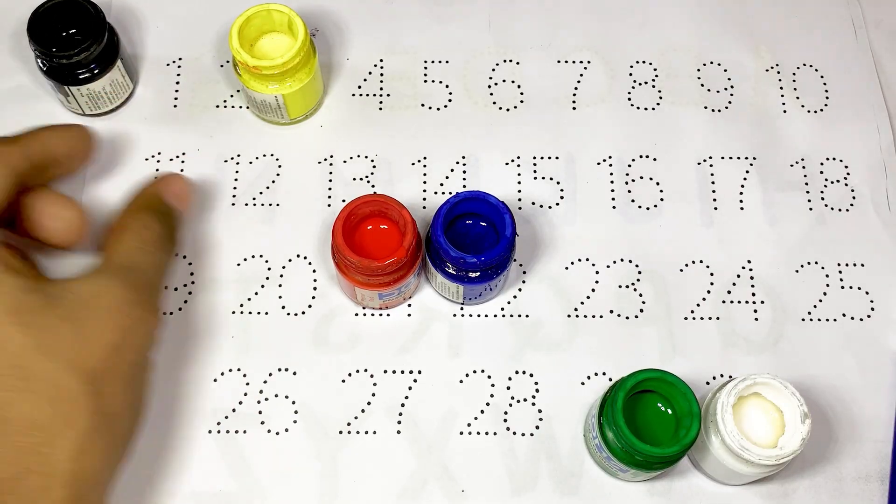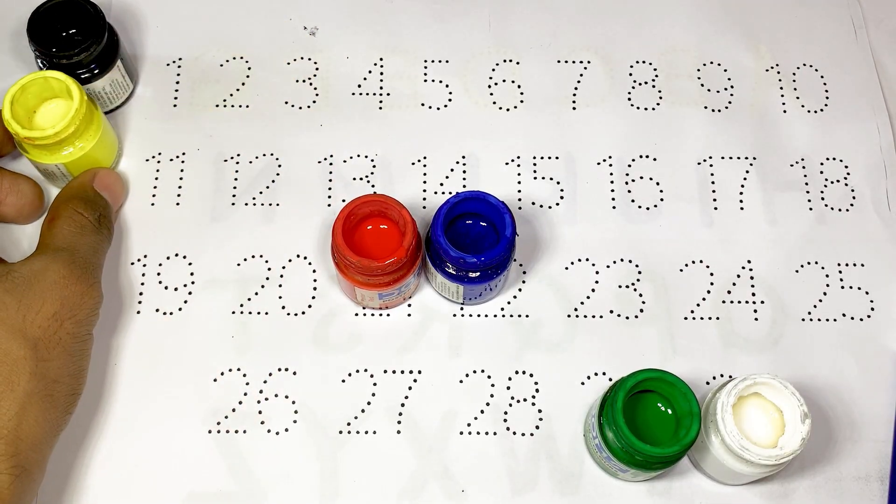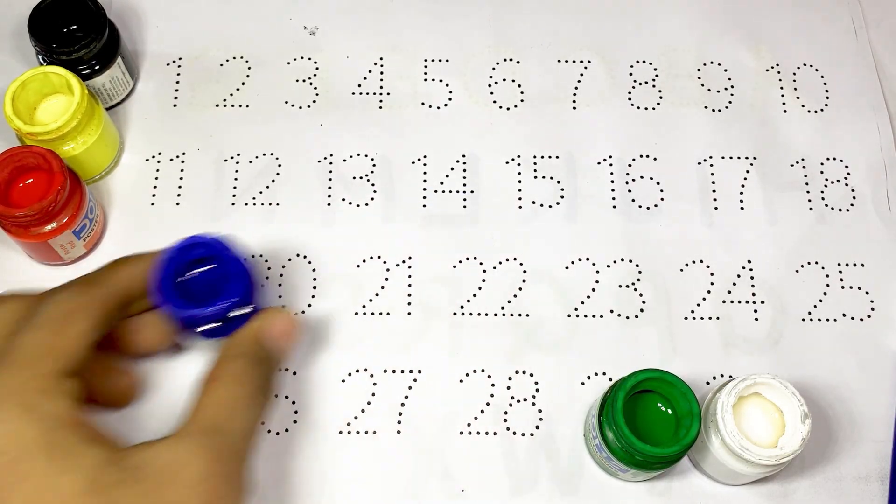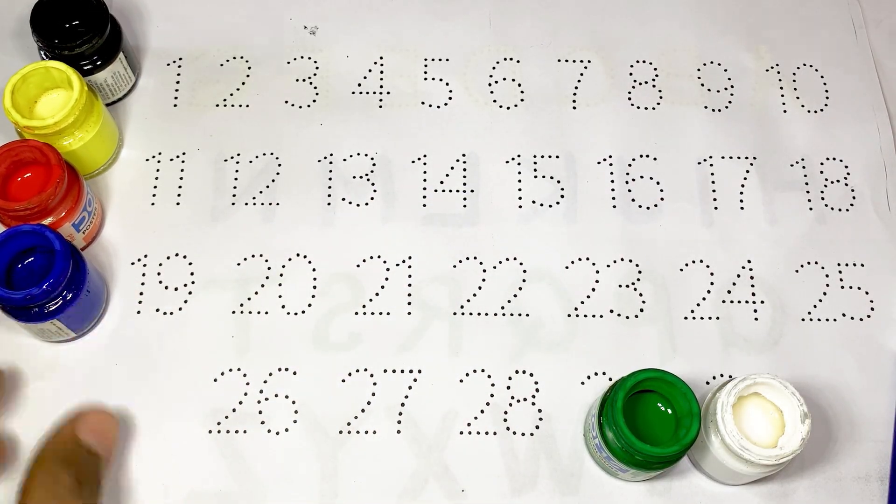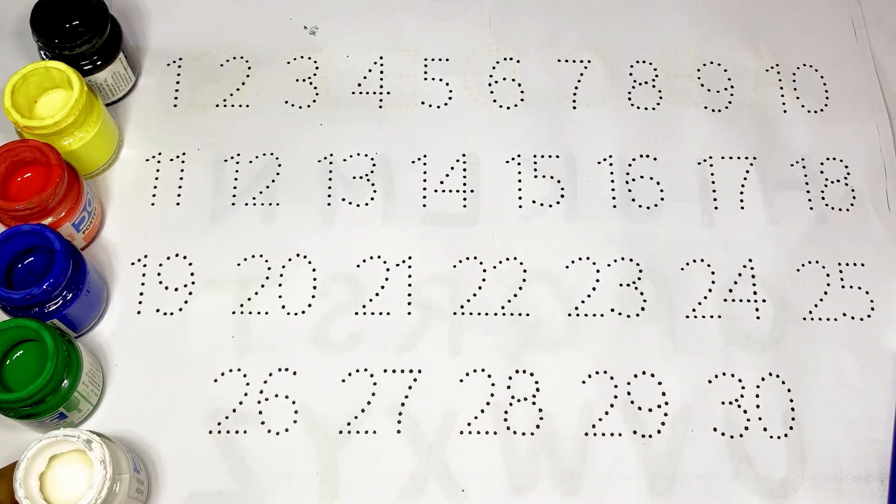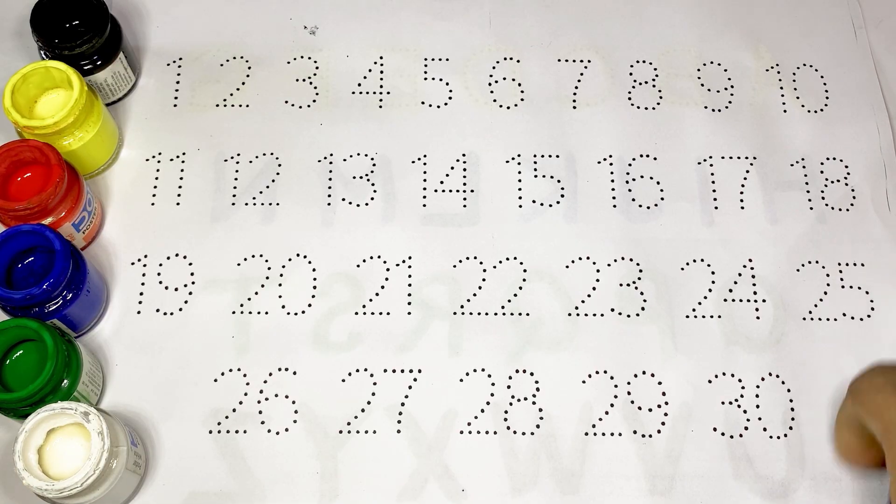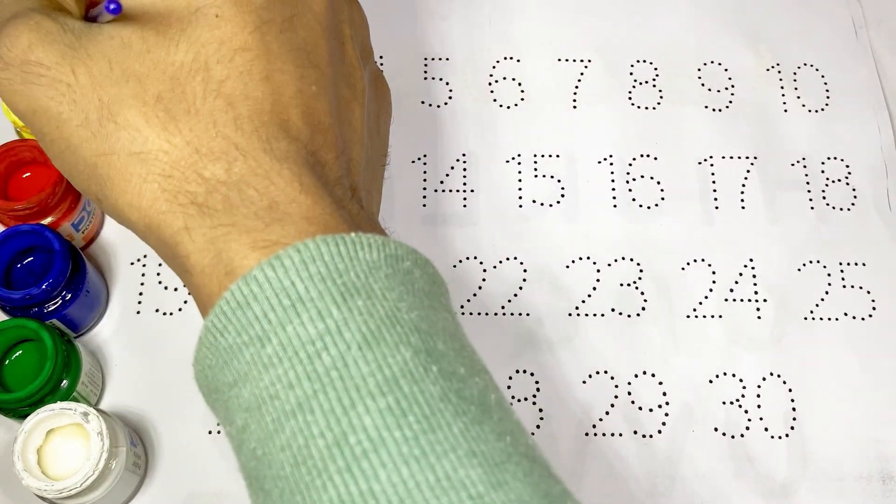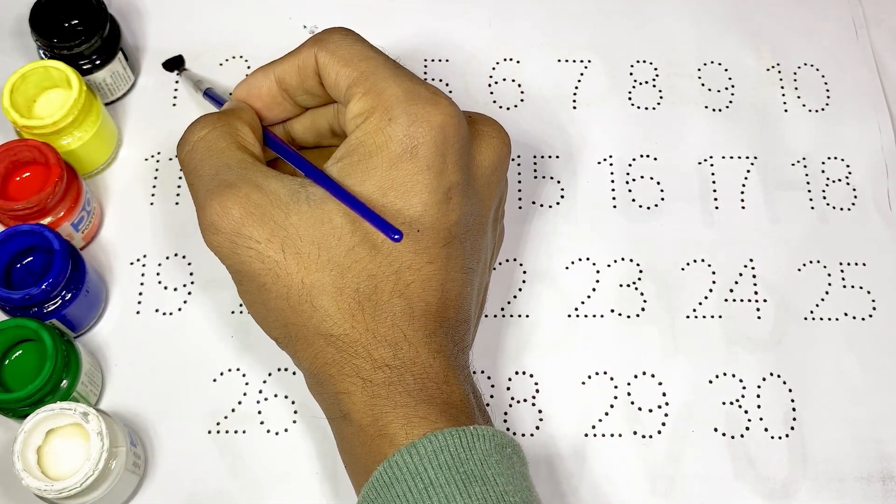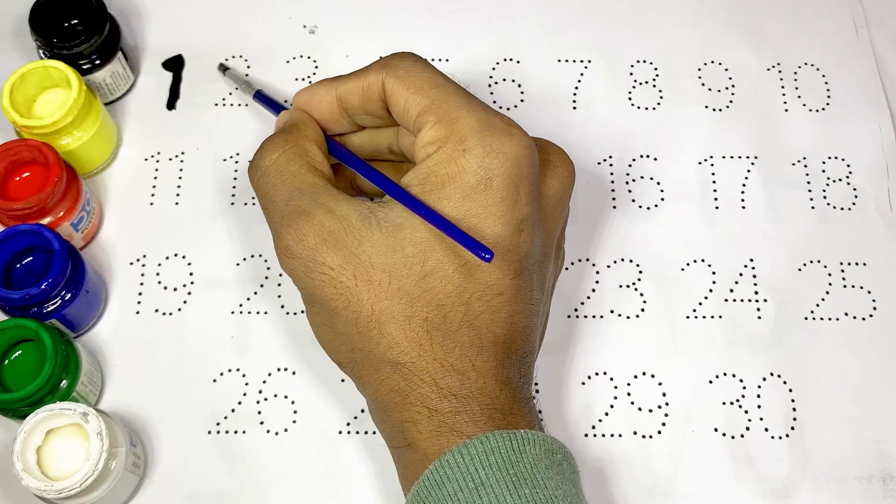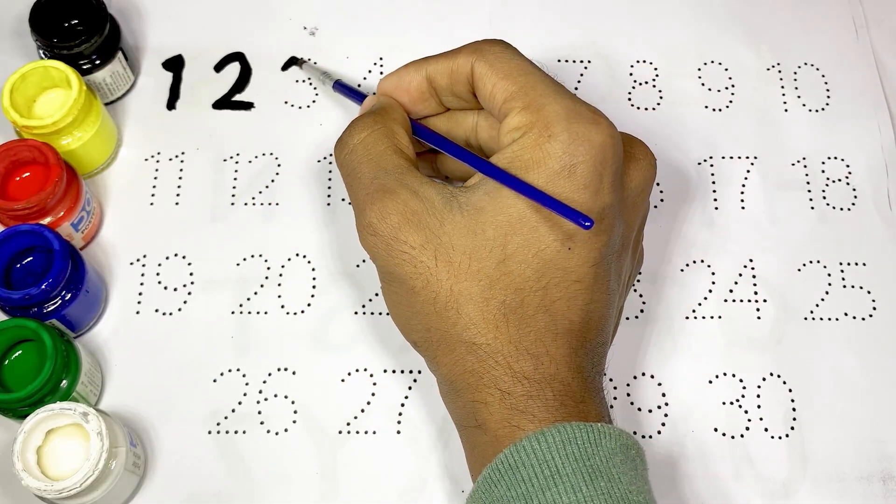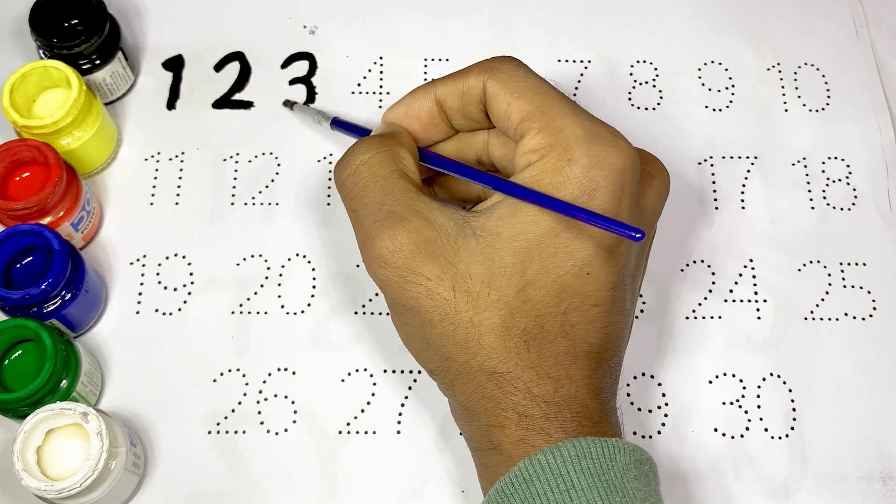Black color, yellow color, red color, blue color, green color, and white color. Kids, number one uses black color. This is one, O-N-E, one. This is two, T-W-O, two.